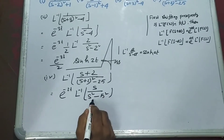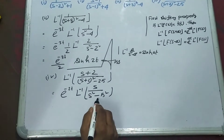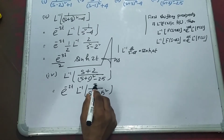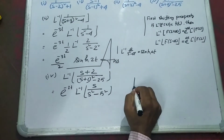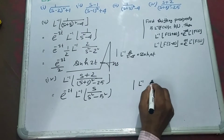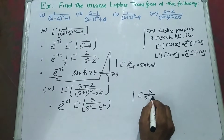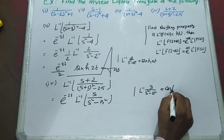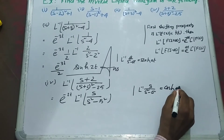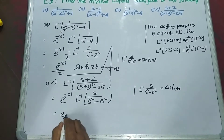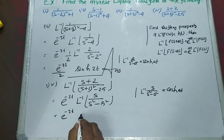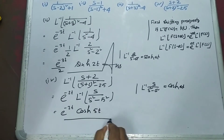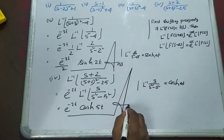Again the denominator is minus, so this is hyperbolic. Since the numerator is s, this is cosh. Recalling the formula: L inverse of s by (s squared minus A squared) equals cosh(At). So the answer is e to the power minus 2t times cosh(5t).